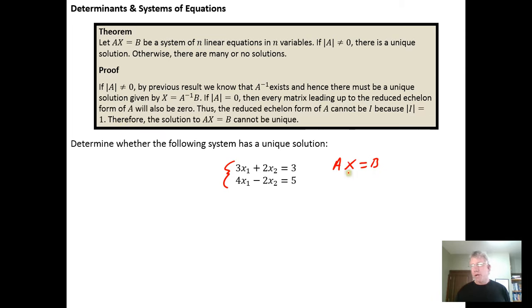We also identified that if A inverse existed we could multiply both sides of this matrix form by A inverse, and we discovered that meant the solution X was going to be a unique solution that looked like A inverse times B. So we were guaranteed a unique solution.